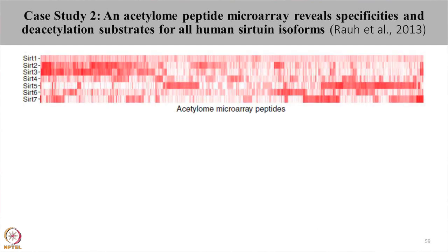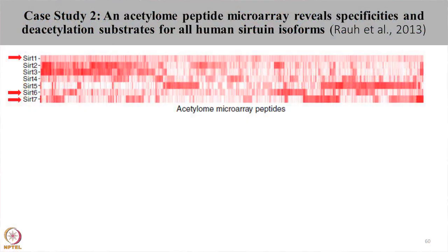This heat map shows the deacetylation activity of all 7 isoforms of sirtuins across 6800 peptides. Sirtuin 1, 6, and 7 locate at the nucleus. When you look at the target peptides, there is a specific pattern of preference for sirtuin 6, 7, and 1. Sirtuin 6 and sirtuin 7 show a specific deacetylation pattern signifying that these 2 isoforms have their specific targets, whereas sirtuin 1 shows nominal activity across a wide range of substrates in the nucleus.